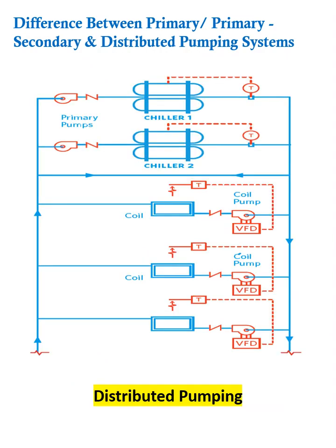The third system is the distributed pumping system. Here, the primary pumps remain, but the secondary pump that was typically centralized has been relocated to the load side — the AHUs or different buildings where chilled water is being pumped. Instead of having one large secondary pump, the requirement is split across multiple applications, and pumps are designed and incorporated based on each application. This saves a lot of energy and reduces investment costs. This configuration is called the distributed pumping system.